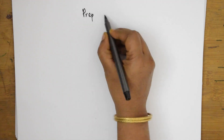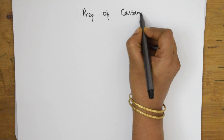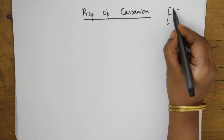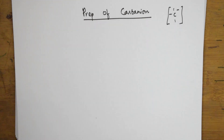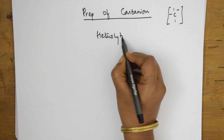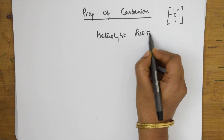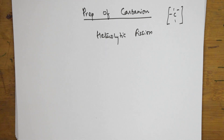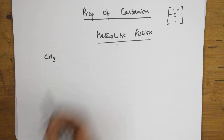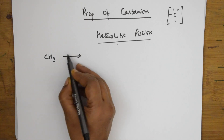Now let's come back and see the preparations of carbanion — the next reaction intermediate. The carbanion, also called carbonium ion, is denoted by C⁻. In carbanion formation, the simplest method is again heterolytic fission — the same concept we used for carbocation.